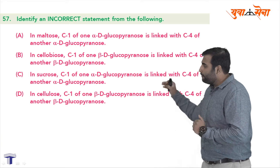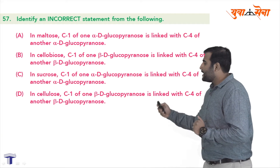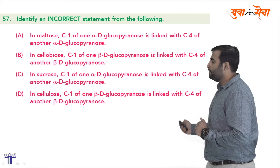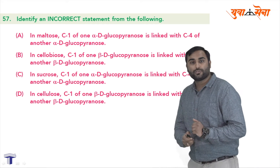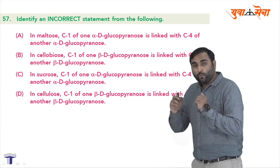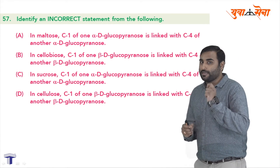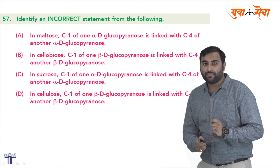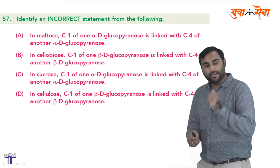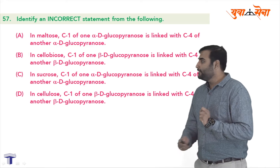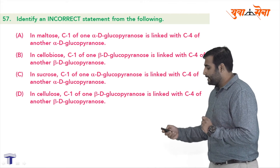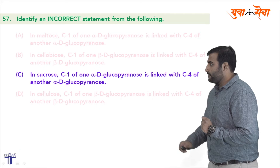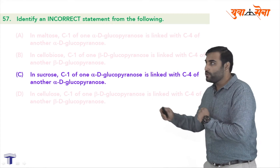So let us see the fourth statement. In cellulose, carbon 1 of beta-D-glucopyranose is linked with carbon 4 of another beta-D-glucopyranose. So quickly ham log kya kareenge exam mein — kyunki samay kam hota hai, fata fata sabka structure draw kareenge. But yahan pe agar hum smart hain, to humein answer turant pata chal jayega ki C hai. So fata se structure draw kareenge — answer sahih C hai, sucrose.